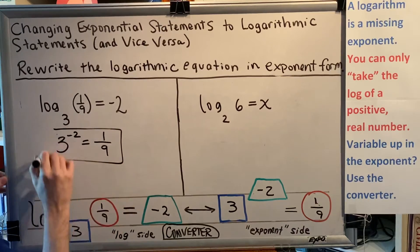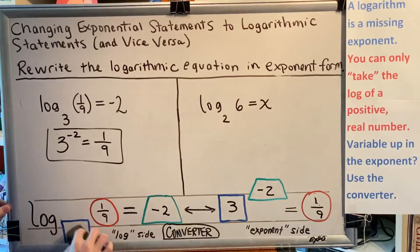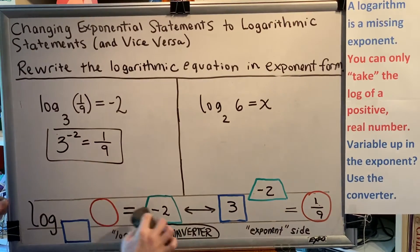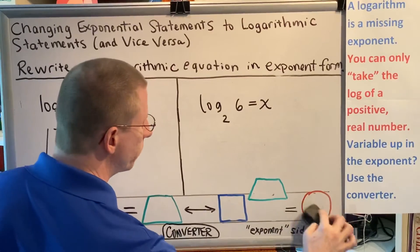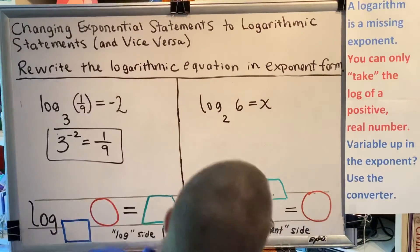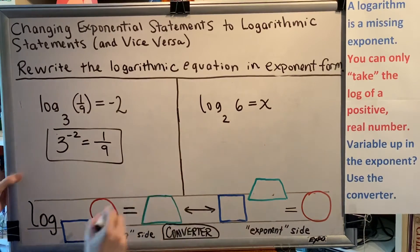Let's now move on to our second problem. Clear the converter here. We've got a log, so we start on the log side. The base is 2, that goes in the blue box.